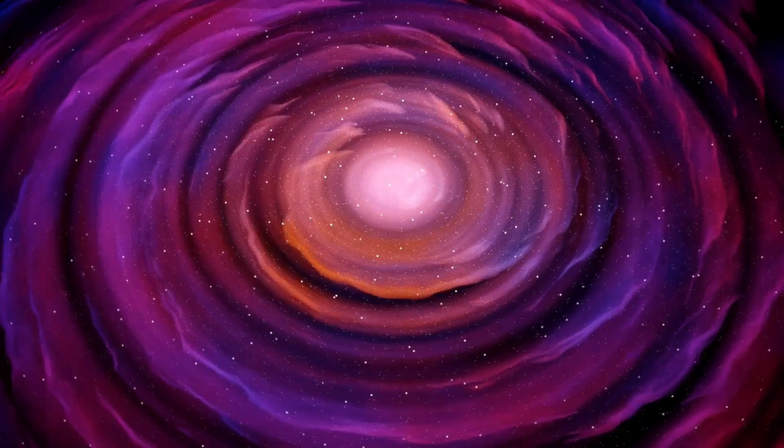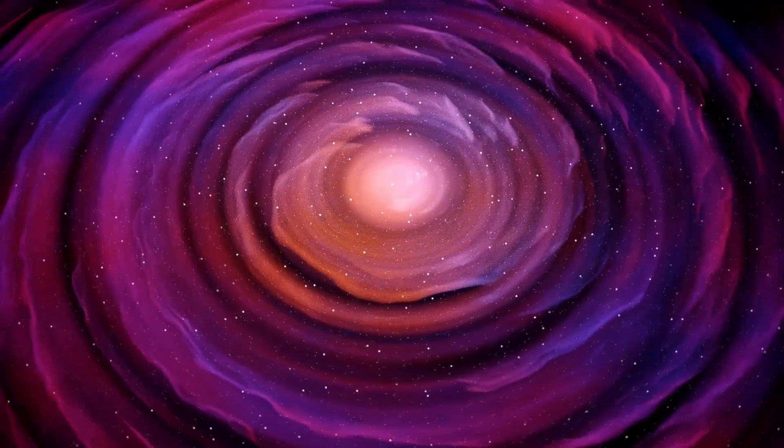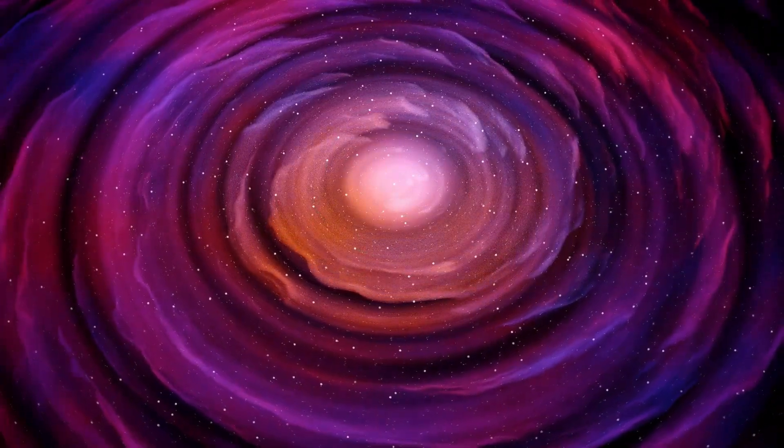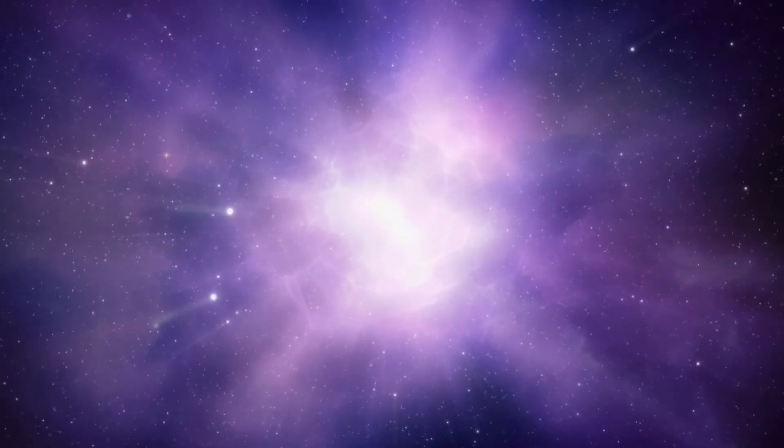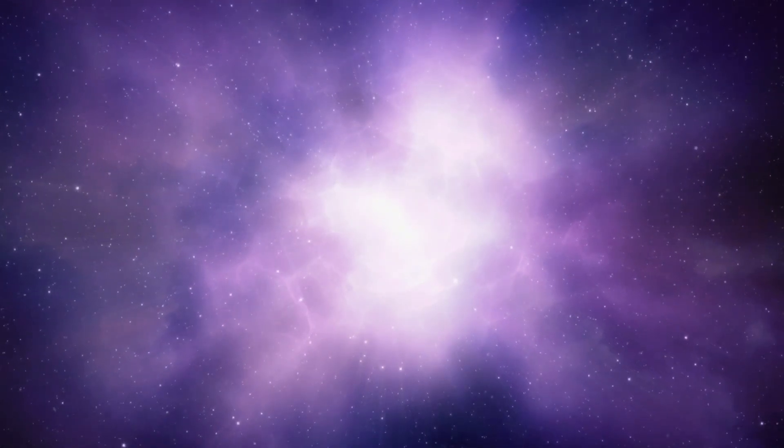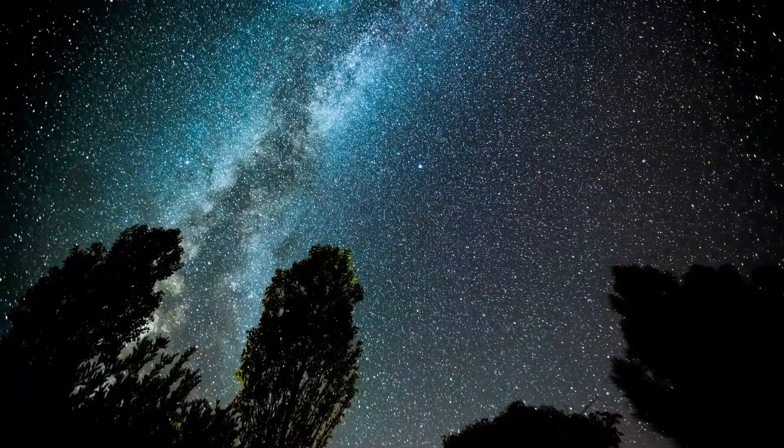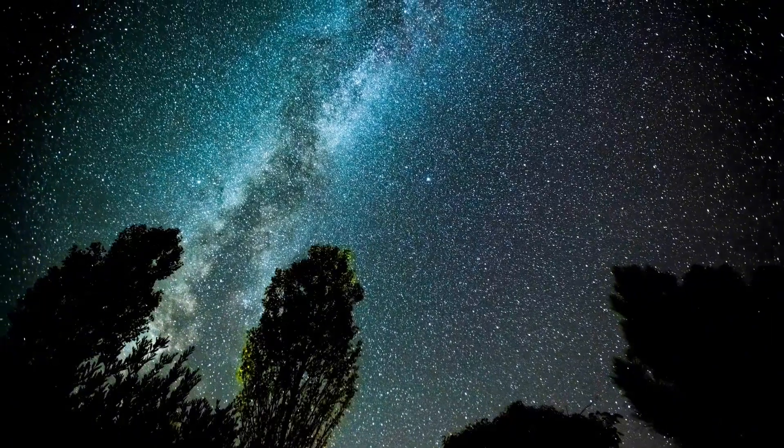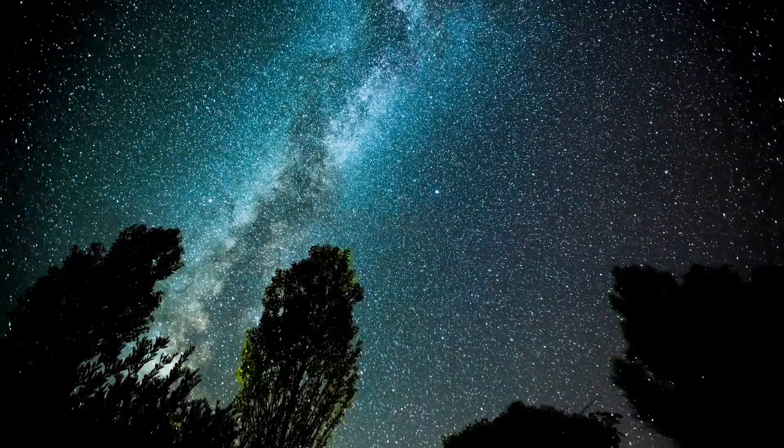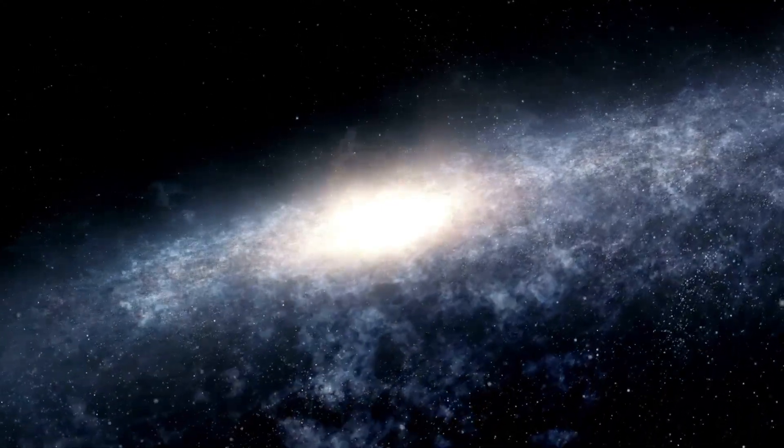The stellar dynamics of Betelgeuse are particularly interesting because of the way massive stars behave as they approach the end of their lifetimes. Unlike smaller stars, which go through relatively predictable phases, massive stars like Betelgeuse undergo a more chaotic and violent evolution. This includes expanding to gigantic sizes, shedding outer layers, and eventually collapsing under the immense pressure in their cores. The collapse triggers a supernova explosion, one of the most spectacular events in the universe.